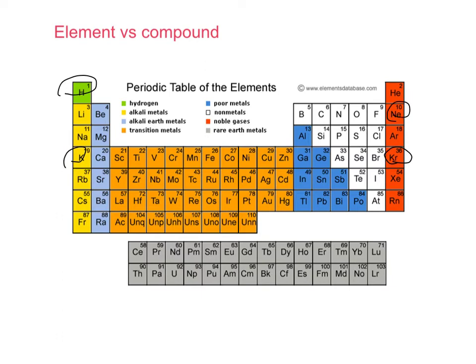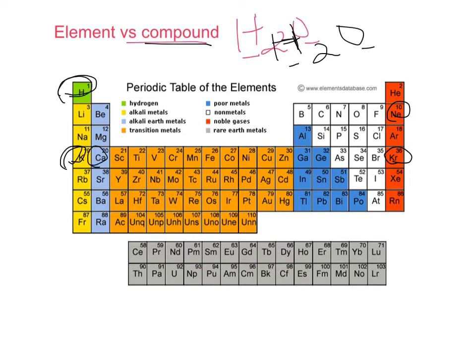A compound is two or more different elements combined in a fixed ratio. For example, water is made of two or more elements — hydrogen and oxygen — combined in a fixed ratio of two hydrogens to one oxygen. The properties of the compound will be different than the properties of the individual elements.